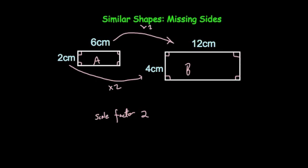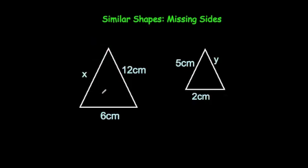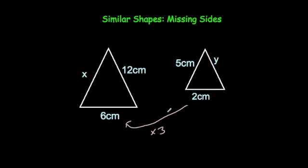Let's have a look at a typical question. Here we've got two triangles and they are similar. The one on the left is larger than the one on the right. The first thing to do is to see what the scale factor of enlargement is. The base of the larger one is 6 centimetres and the base of the smaller one is 2 centimetres. If you times by 3 you get from 2 to 6, so the scale factor of enlargement is 3.